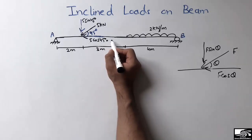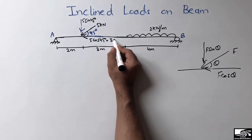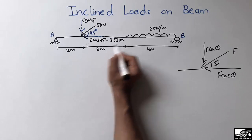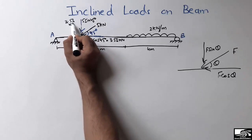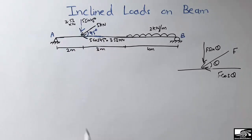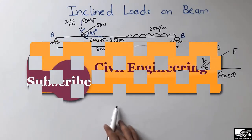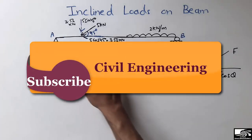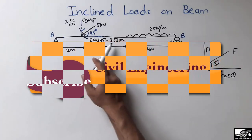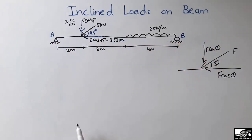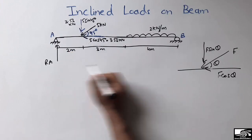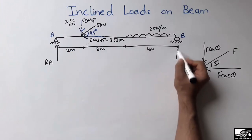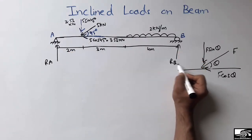After resolving the force into two components, I got the horizontal component as 3.53 kN and the vertical component as 3.53 kN. Because the load makes an angle of 45 degrees, both the vertical and horizontal components are equal.